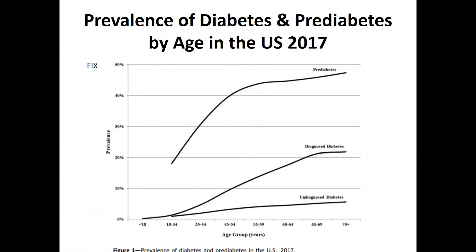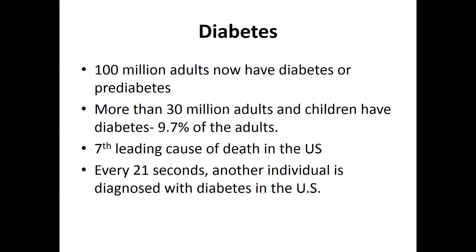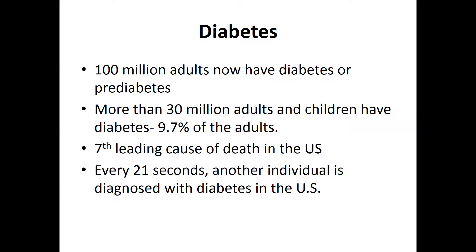The prevalence of diabetes by age is rising dramatically. Pre-diabetes is tremendous, and there's both diagnosed and undiagnosed diabetes. Roughly almost 40% of patients in the middle-aged group have diabetes. A hundred million adults now have diabetes or pre-diabetes, and more than 30 million adults have diabetes — constituting almost 10% of the adult population. It's the seventh leading cause of death, and every 21 seconds another person is diagnosed with diabetes.